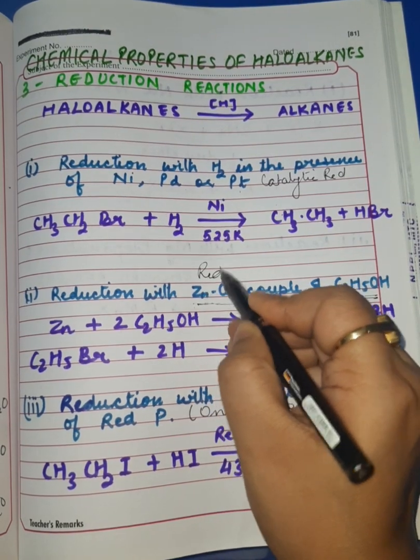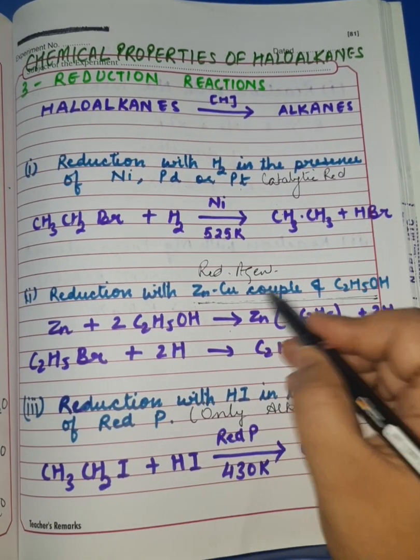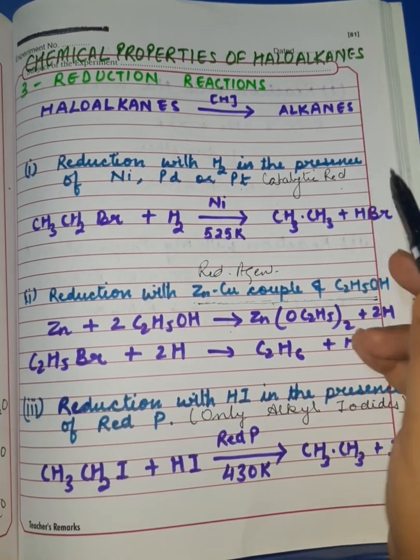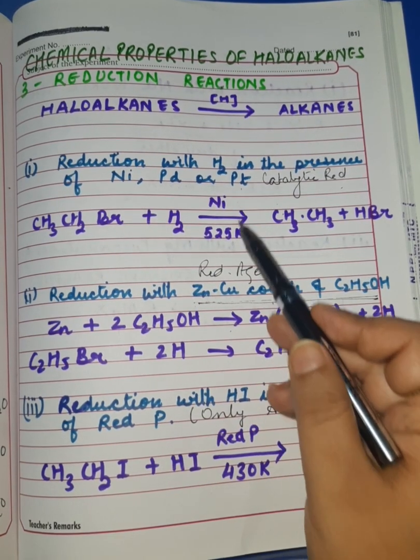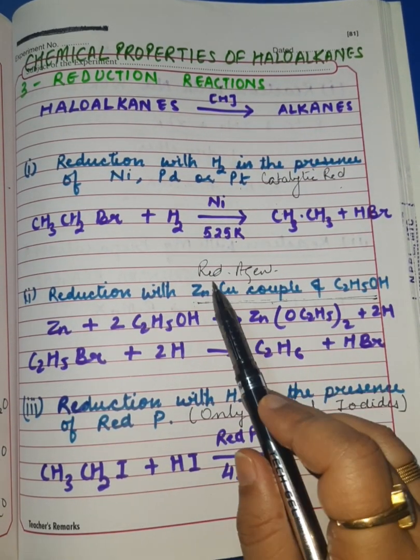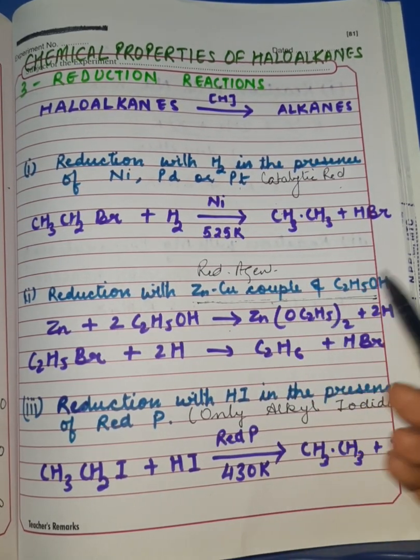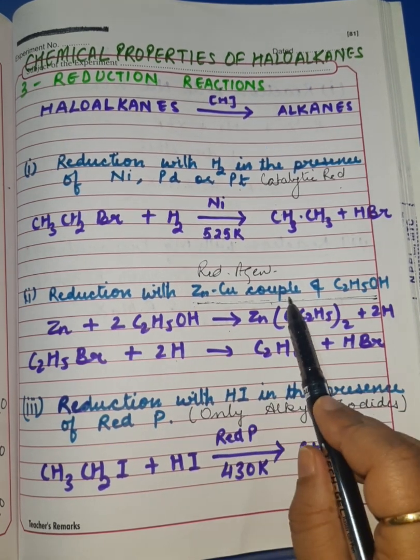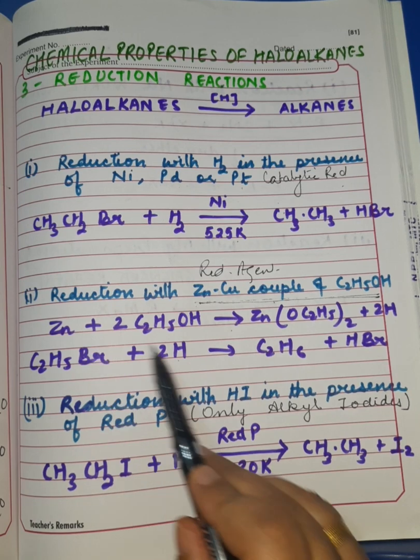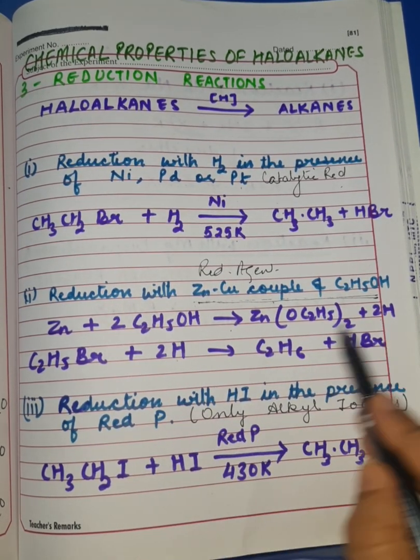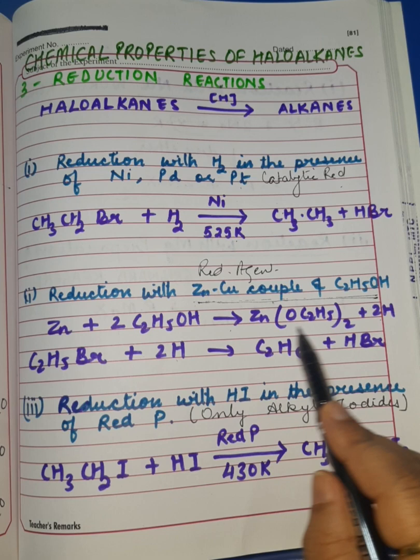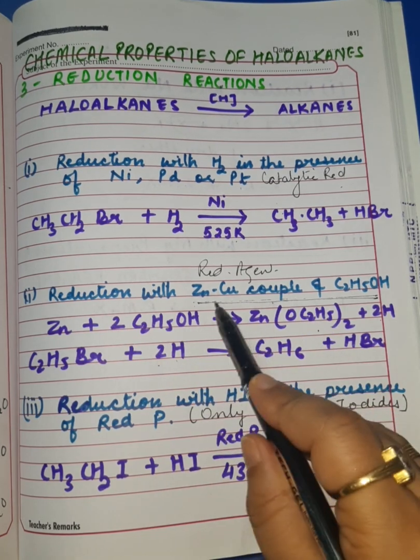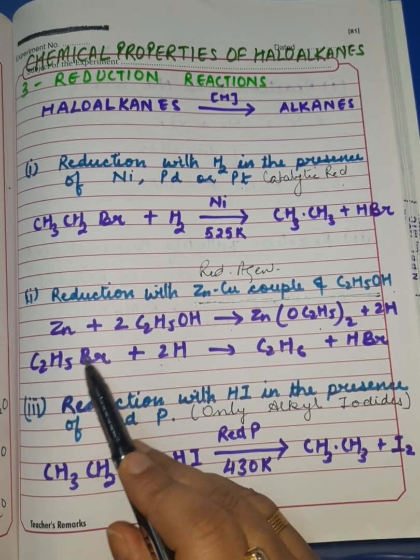There is a difference between catalytic reduction and use of reducing agent. Catalytic reduction is always carried out with hydrogen gas in the presence of a particular catalyst at a particular temperature, whereas when we use a reducing agent, these reducing agents furnish nascent hydrogen which brings about the reduction of the compound. Here, zinc-copper couple along with ethyl alcohol—zinc interacts with ethyl alcohol, furnishes nascent hydrogen, and this nascent hydrogen reduces the particular haloalkane into its respective alkane.